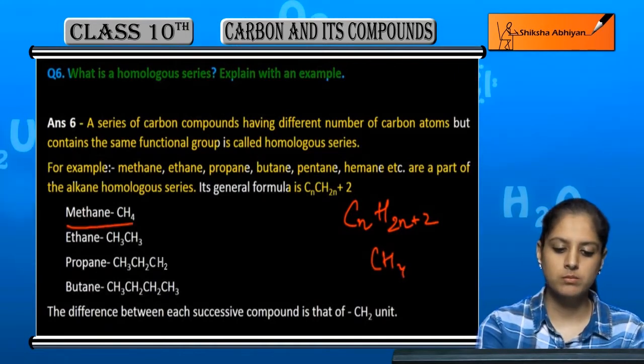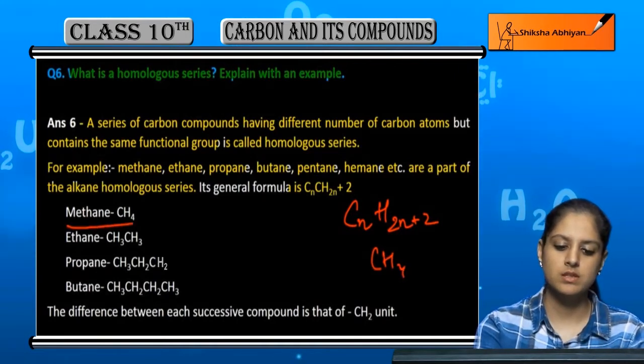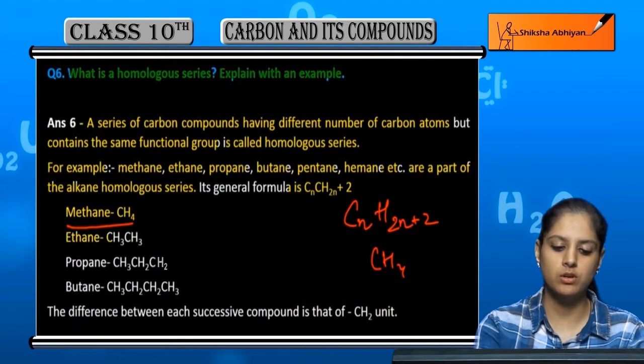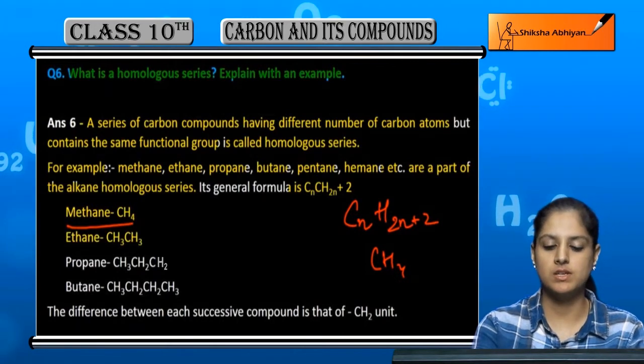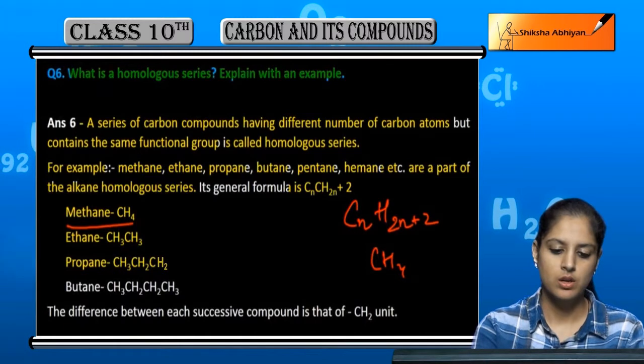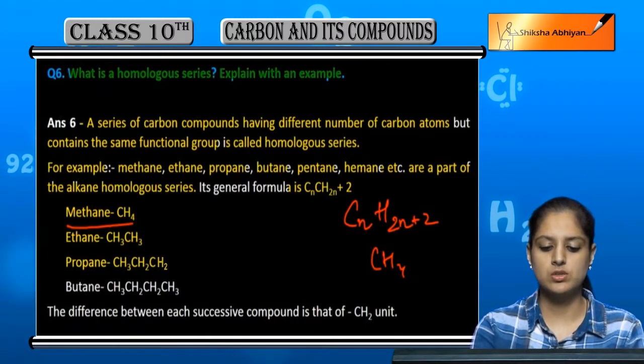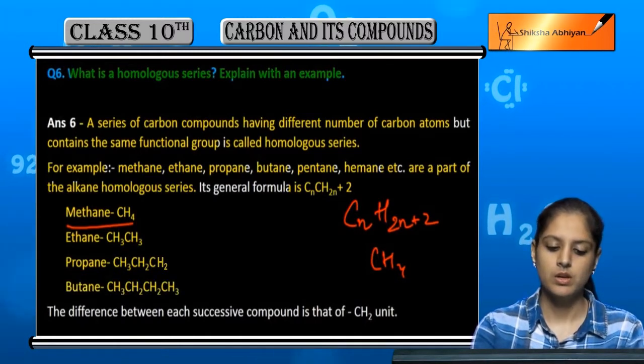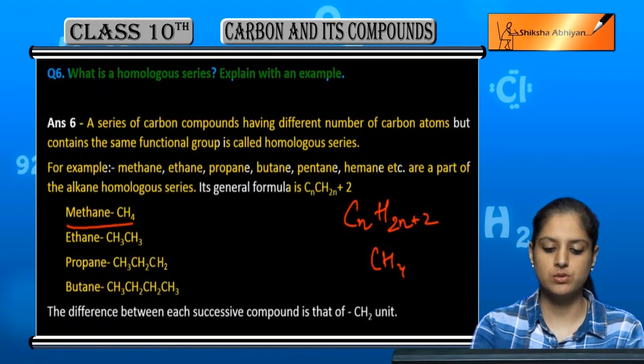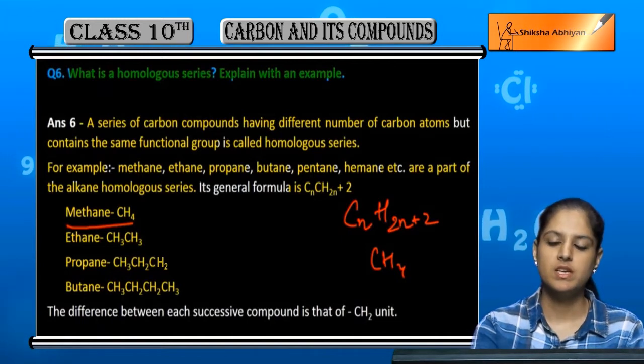So as we see, CH4 methane is the first member. Ethane is C2H6, which is CH3-CH3. Propane is CH3-CH2-CH3. Butane is CH3-CH2-CH2-CH3.